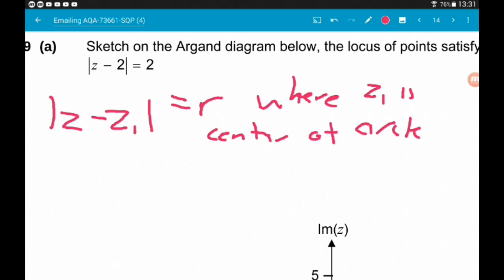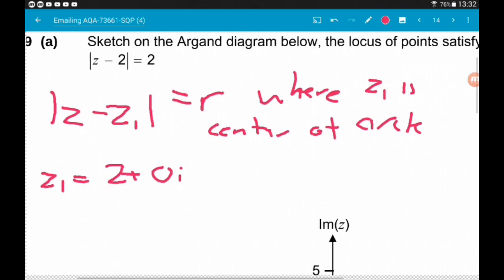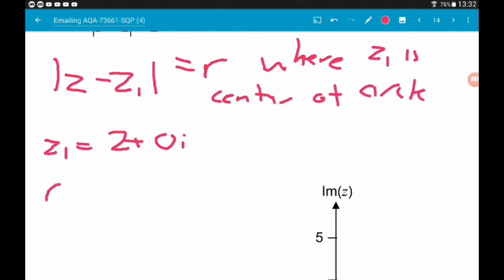So if we compare what we have in mod of z minus 2 to mod of z minus z1, we can see then here z1 is equal to 2 plus 0i. There's no imaginary part here to the centre of the circle. So this is a circle centred at 2, 0 on the Argand diagram with radius of 2.